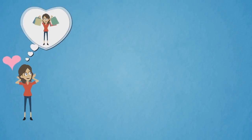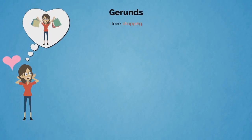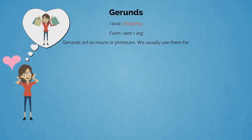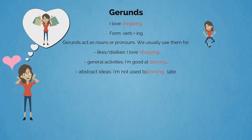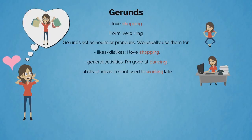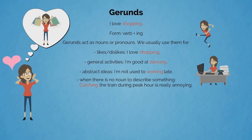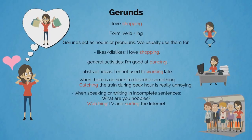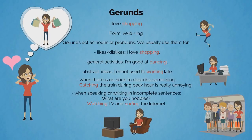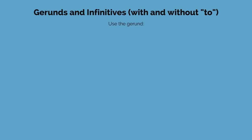What do you think she's thinking? 'I love shopping!' — 'shopping' is a gerund. Gerunds take the form of verb plus -ing and act as nouns. We usually use them for likes and dislikes ('I love shopping'), general activities ('I'm good at dancing'), abstract ideas ('I'm not used to working late'), when there is no noun to describe something ('Catching the train during peak hour is really annoying'), and in incomplete sentences ('What are your hobbies? Watching TV and surfing the internet').